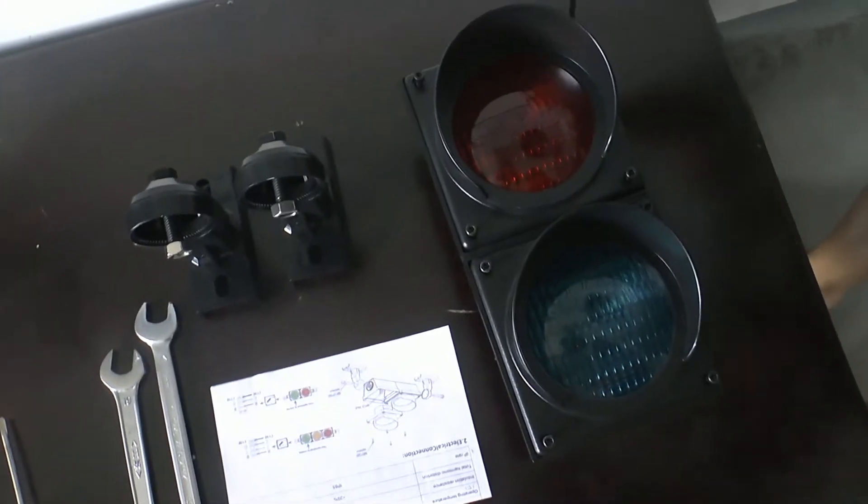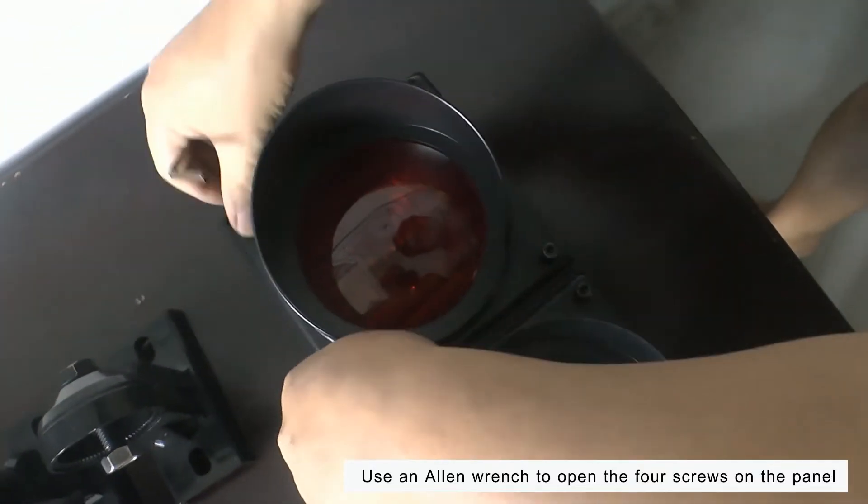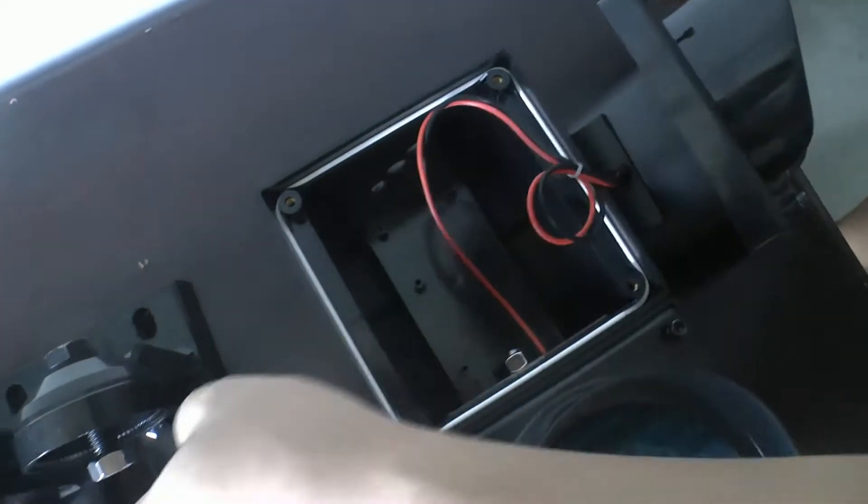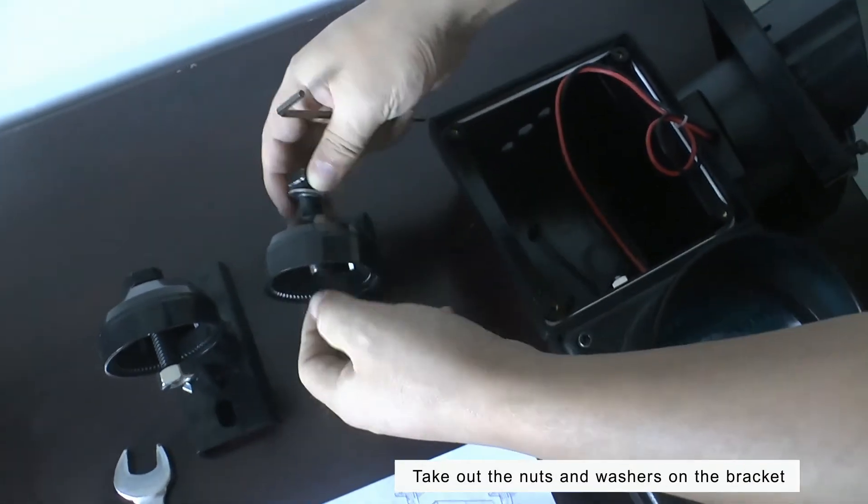Our engineers will demonstrate how to install the traffic light on the pole. First, turn out the light bulb and take off the screw of the brackets.